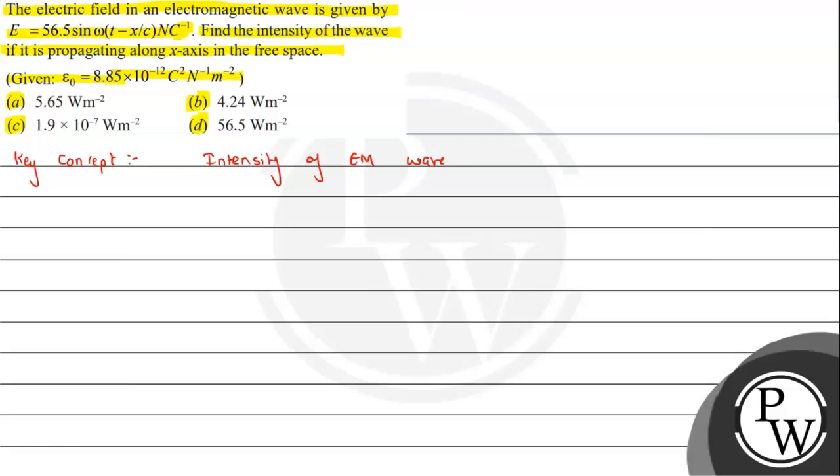Per unit time per unit area. The energy passing through per unit area in unit time is nothing but the intensity.